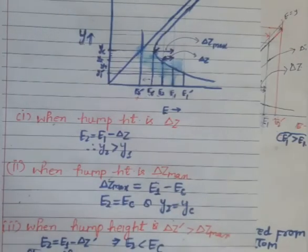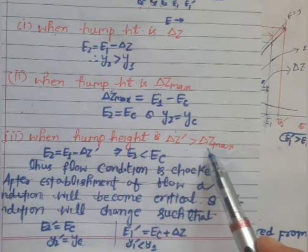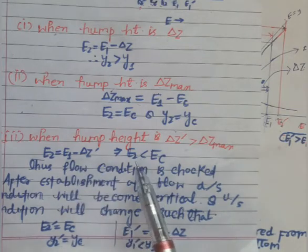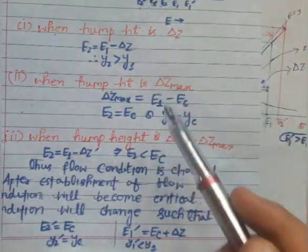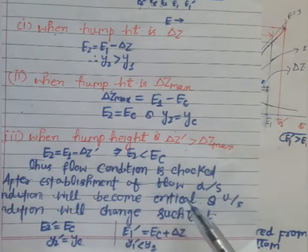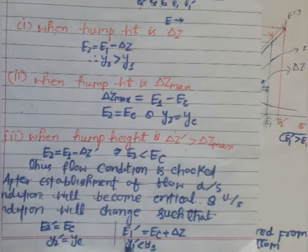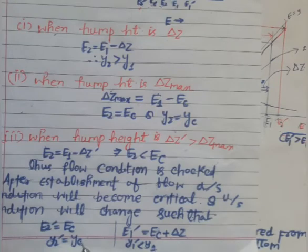Here in Case 3, when the hump height ΔZ' is greater than ΔZ_max, e2 = e1 − ΔZ' and e2 is less than ec. The flow condition becomes choked, and the downstream flow condition becomes critical. When we increase the specific energy at section 1, e2 will equal ec and e1-dash = ec + ΔZ'.